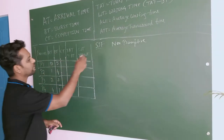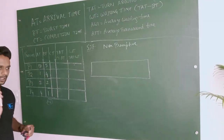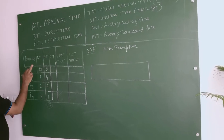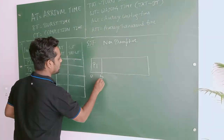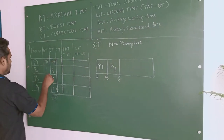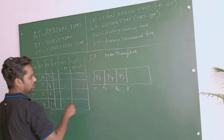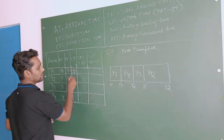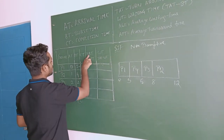Now we'll discuss the same table using SJF non-preemptive. Non-preemptive means it does not shift from one process to another until total completion. Shortest Job First — which is the shortest job? P3, but it arrives only after 2 seconds, so you can't start with it. Whichever process has arrival time 0 executes first: P1 executes for its full burst time of 5 seconds. After P1, the shortest remaining is P4 with 1 second: 5 + 1 = 6. Then P3 with 2 seconds: 6 + 2 = 8. Finally P2 with 4 seconds: 8 + 4 = 12.